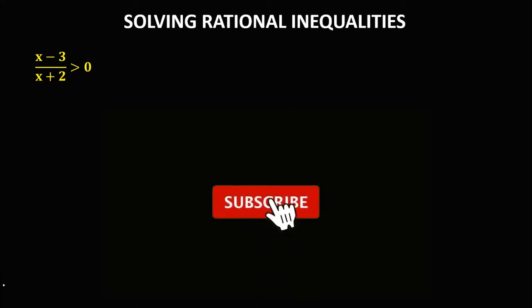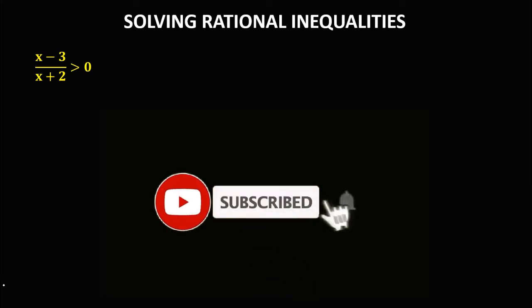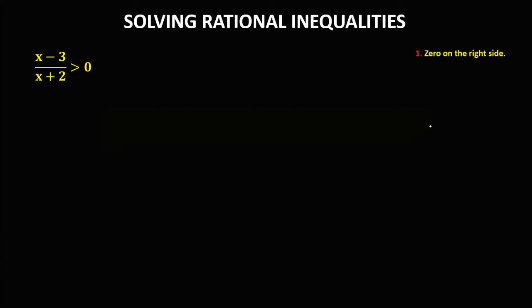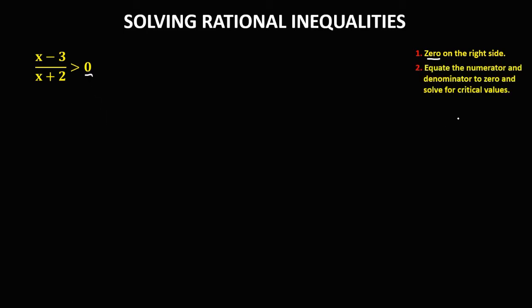Let's have this topic: solving rational inequalities. First, we need to check the given — if the right side is equal to zero. Since on this given the right side is zero, we can proceed to equate the numerator and denominator to zero.